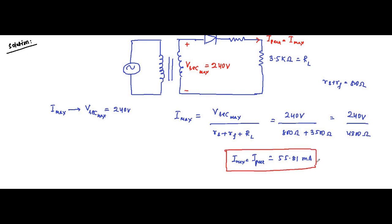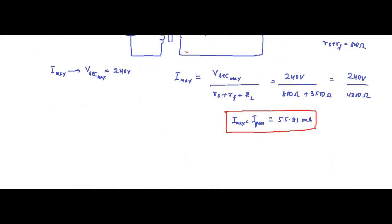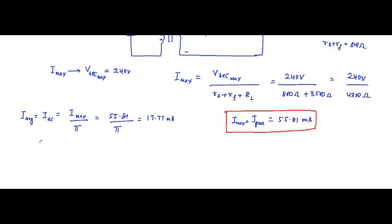Next, we find the average value and the RMS value. The average value, also called the DC value, I_dc, equals I_max divided by π for a half wave rectifier. That is 55.81 divided by π, which comes to approximately 17.77 milliampere — that is the average value or DC value.